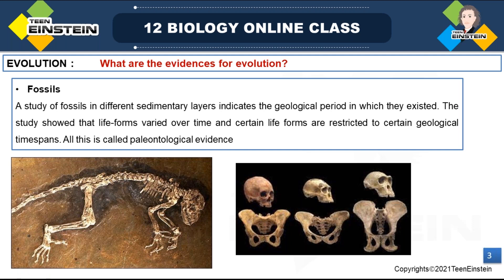Some fossil forms represent extinct organisms — for example, dinosaurs are not present today. But at the same time, some fossils represent modern pattern organisms and show similarity with modern organisms. Both types are there: some organisms are not on Earth anymore, but some fossils show similarity towards modern organisms.